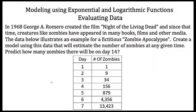So now let's try looking at an example. In 1968, George Romero created the film Night of the Living Dead, and since that time, creatures like zombies have appeared in many books, films, and other media. Our data below illustrates an example for a fictitious zombie apocalypse. Let's create a model using this data that will estimate the number of zombies at any given time, and then predict how many zombies there will be on day 14. We start with one zombie on day one, and by day seven we have over 13,000 zombies.